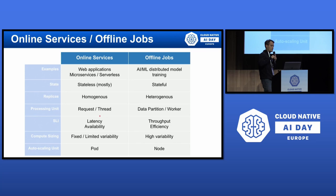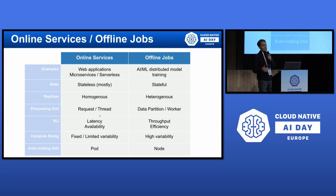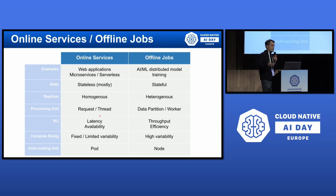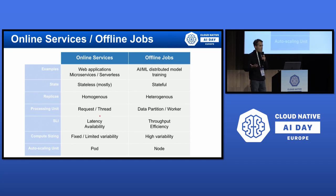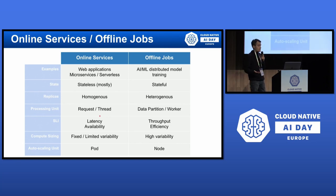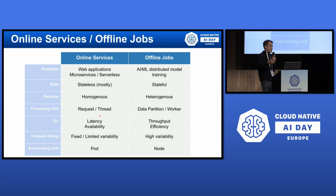It's important for the discussion to quickly see what differentiates offline jobs from online services that Kubernetes is good at orchestrating. A typical example of an online service is a web application, a microservices architecture, or a serverless application. These are mostly stateless applications where the replicas are homogeneous — the same kind of workload — disposable, and generally the processing unit is the request, processed by a thread or a routine.